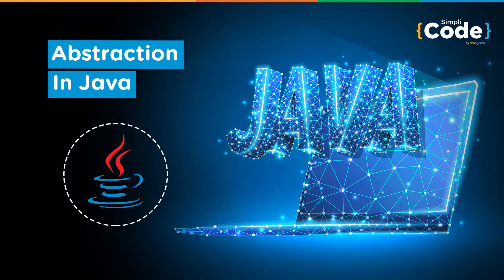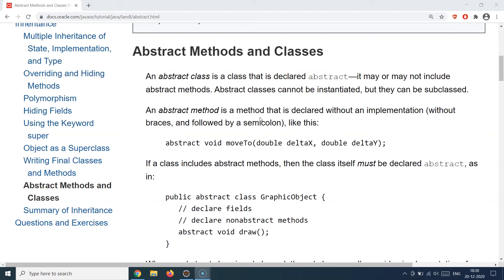Hello guys and welcome back to the Simply Code programming channel. This is Vikesh and let's get started with today's topic, which is about abstraction. Let's first understand the definition of abstraction before we relate this to Java. Abstraction generally means hiding something — when you want to hide some details of a particular object from the outside world, you apply the concept of abstraction.